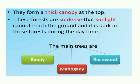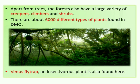The main trees found in equatorial forests are ebony, mahogany, and rosewood. Apart from trees, the forests also have a variety of creepers, climbers, and shrubs covering the forest floor. There are about 6,000 different types of plants found in the Democratic Republic of Congo, including the Venus flytrap, an insectivorous plant.